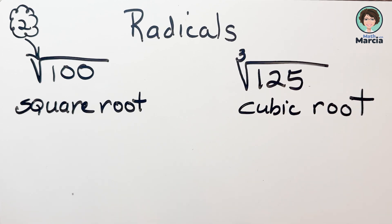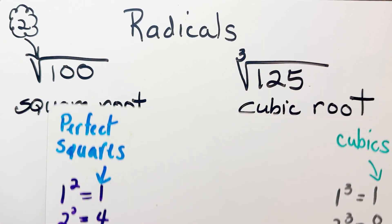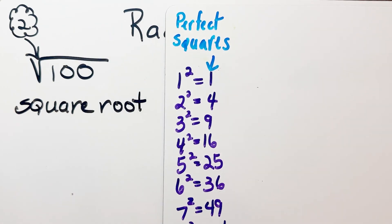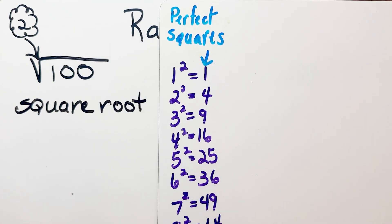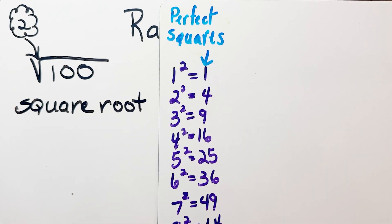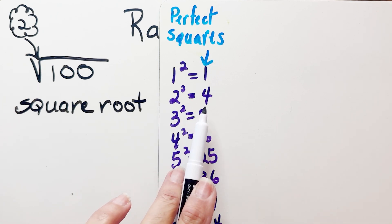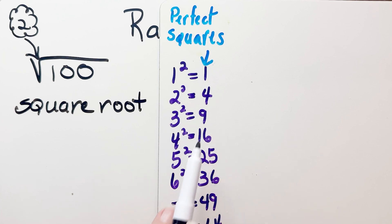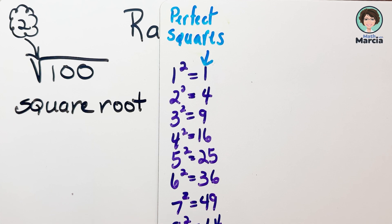You might be saying to yourself, well what does that mean? What do I do with these boxes that don't quite look like division boxes? We have to know other foundational facts. For our square root, these are your perfect squares — one times one is one, two squared is four, three squared is nine, and so on. It's really important to know up to even 20 to help you simplify radicals.